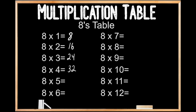8's table. 8 x 5 is 40. 8 x 6 is 48. 8 x 7 is 56. 8 x 8 is 64. 8 x 9 is 72. 8 x 10 is 80. 8 x 11 is 88. And 8 x 12 is 96.